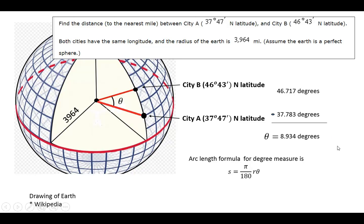Using the arc length formula for degree measure, the arc length equals pi divided by 180 times the radius times the angle. Substituting the radius and theta,